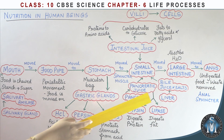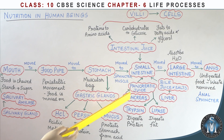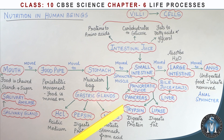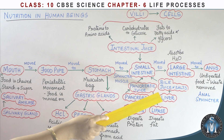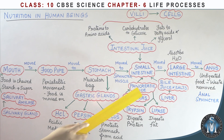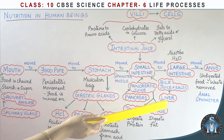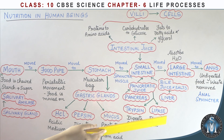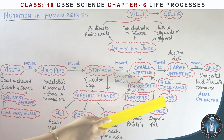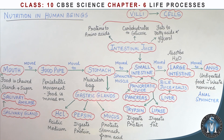The liver secretes bile juice into the small intestine. In our stomach the medium is acidic, but bile juice makes it alkaline, so that pancreatic juice can act. Bile salts also break fat globules into smaller droplets — a process called emulsification — making digestion easier.